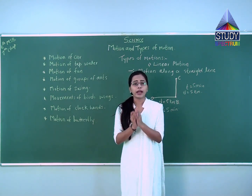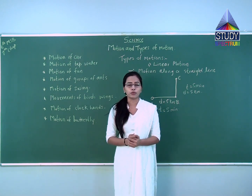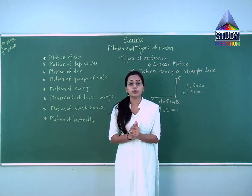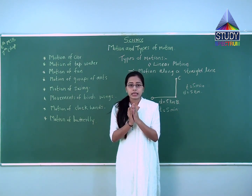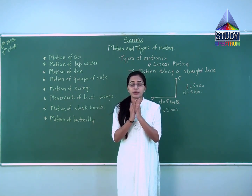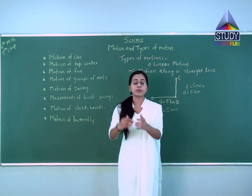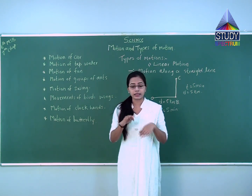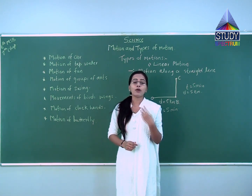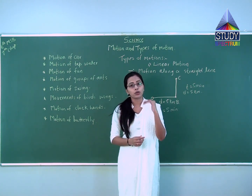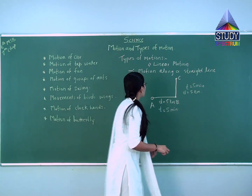Examples of uniform linear motion include the motion of ants, who cover a specific distance in a particular time. Also consider soldiers performing a parade — all soldiers cover a similar distance in similar time, with very precise footsteps. This kind of motion is also uniform motion. So for linear motion we have two kinds: non-uniform linear motion, like our walking, and uniform linear motion.